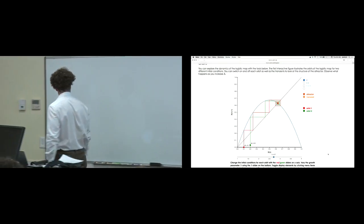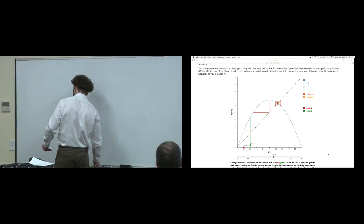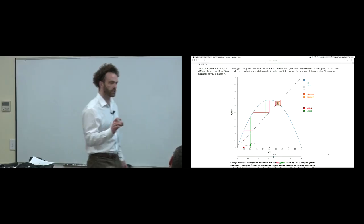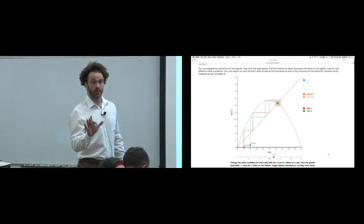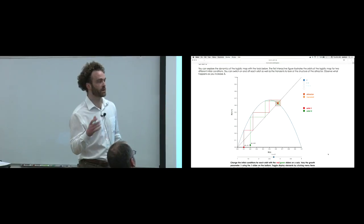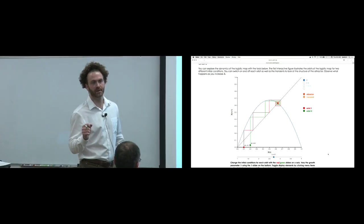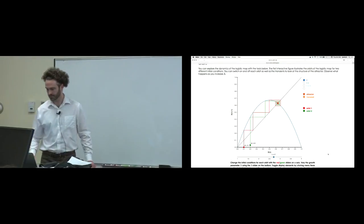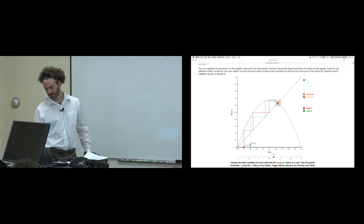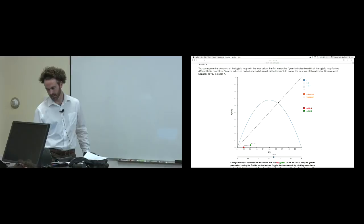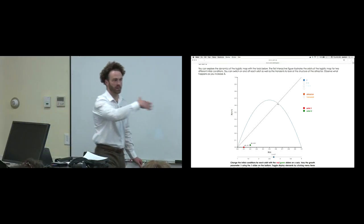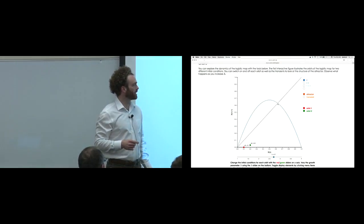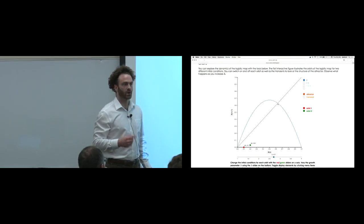We're going to try and finish chapter three. We finished last time talking about basins of attraction - we worked through a polar coordinate example. One of the questions we haven't addressed much so far is: when we're looking at the attracting state for an individual dynamical system, like 2.7x times (1 minus x), we've been saying the points between 0 and 1 are in the basin of the sink because all the ones we've iterated go there.